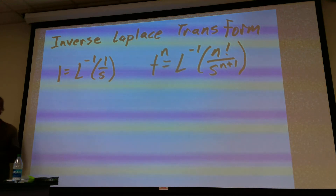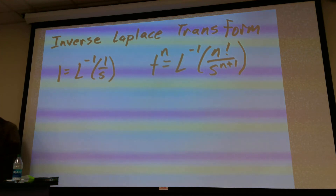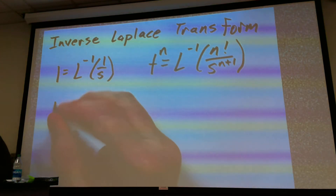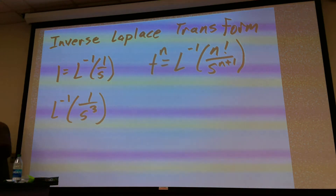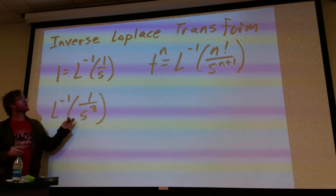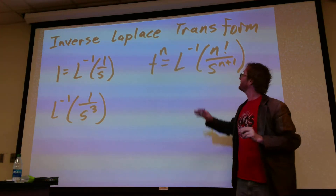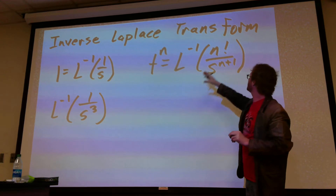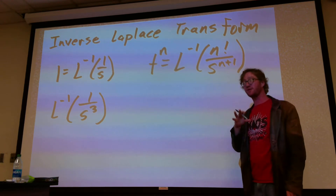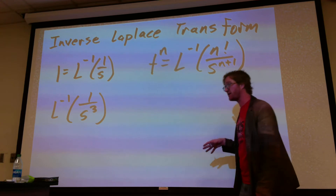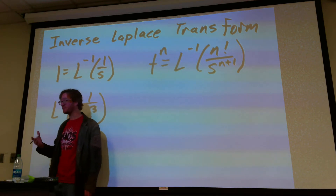It's basically just undoing the Laplace transform that we did from the last class. So let's say we wanted to do the inverse Laplace transform of 1 divided by s cubed. We're thinking that this is going to be related to this formula. So n plus 1 equals 3, meaning n is going to be 2. But we don't have a 2 factorial on top. Remember, you can multiply inverse Laplace transforms by constants because the Laplace transform is just an integral — we have linearity and it can be multiplied by a constant.